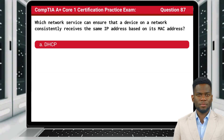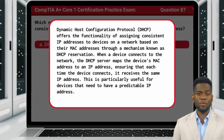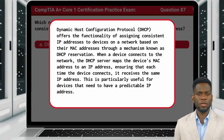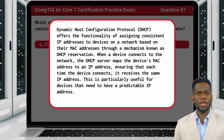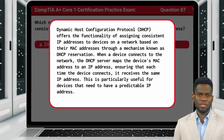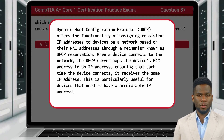The answer is A: DHCP. Dynamic Host Configuration Protocol (DHCP) offers the functionality of assigning consistent IP addresses to devices on a network based on their MAC addresses through a mechanism known as DHCP reservation. When a device connects to the network, the DHCP server maps the device's MAC address to an IP address, ensuring that each time the device connects, it receives the same IP address. This is particularly useful for devices that need to have a predictable IP address.